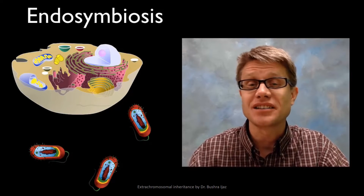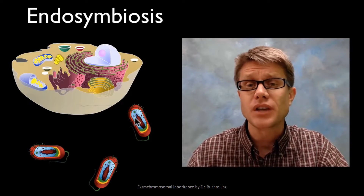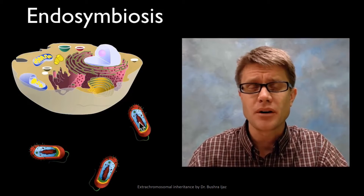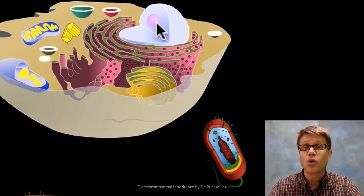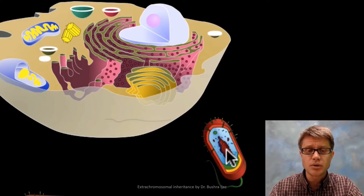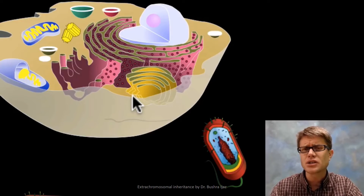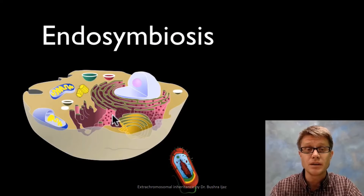Hi, it's Mr. Anderson. In this podcast I'm going to talk about endosymbiosis. There are two major groups of cells: prokaryotic cells, like bacteria, which have a cell membrane, cell wall, and DNA organized in a nucleoid region; and eukaryotic cells, which have a nucleus and organelles like endoplasmic reticulum, Golgi apparatus, and mitochondria. In the fossil record, life started about 3.6 billion years ago and we see only prokaryotic cells for a long time, with eukaryotic cells not appearing until around 2 billion years ago.